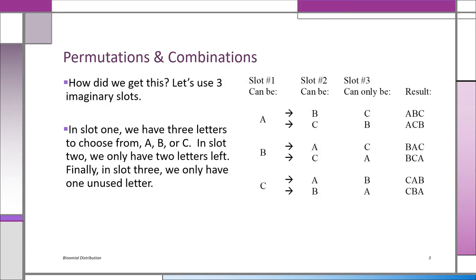Now we know three permutation three is six. N is how many objects — in this case letters — how many we have. So three letters: A, B, and C. Then we have R, which is going to be the number of slots — the three slots.